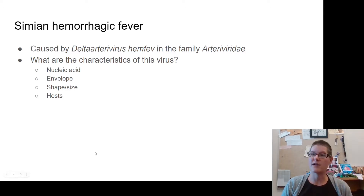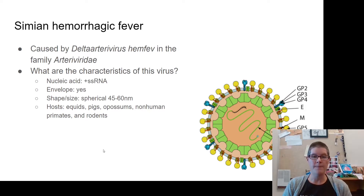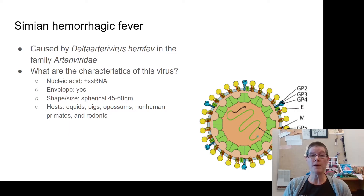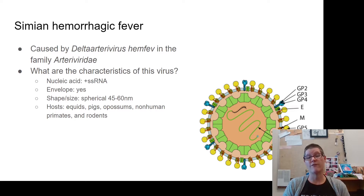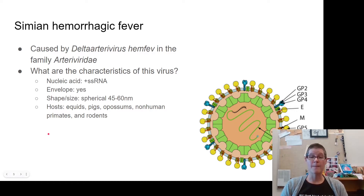Simian hemorrhagic fever is caused by the delta arterivirus in the family Arteriviridae. If you look it up, you'd find it has a positive sense single-stranded RNA, it does have an envelope, and it is a spherical virus at about 45 to 60 nanometers — extremely small. Its host specificity includes equids, pigs, opossums, non-human primates, and rodents. Simian hemorrhagic fever is unlikely to infect a human host, so at the time in Reston, they figured everything was just fine — the monkeys were sick, but it would be okay.